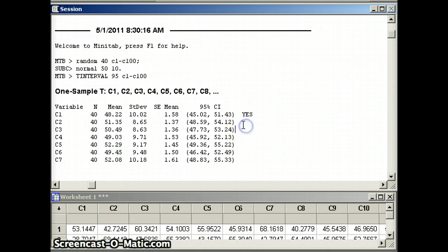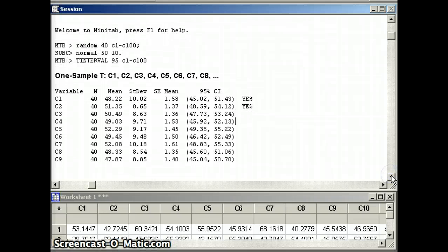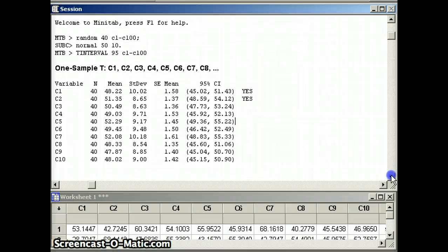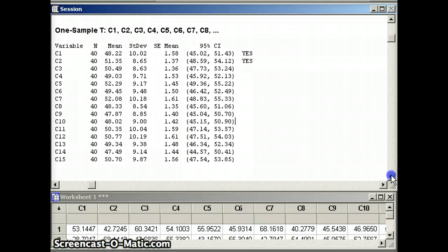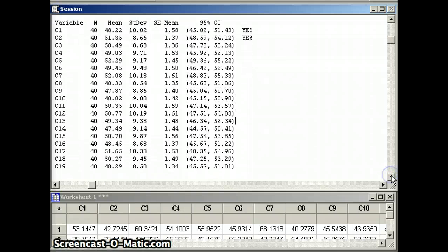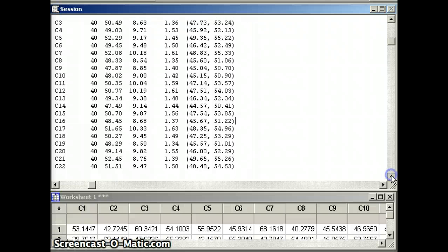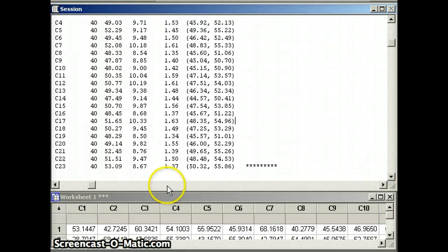Now we can go through and look at each one. Second one, 48.59 to 54.12, that is also a good confidence interval. Now we can continue in that regard, but that's going to be sort of tricky. Rather than that, I'm going to look for the ones that are bad. So can we find one that doesn't cover 50? So it either starts after 50 or it ends before 50. So we're going to go through our list and we're going to look to see if we can find any like that.